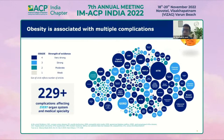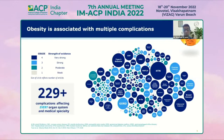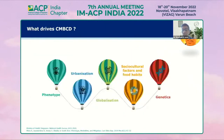You can see here the dark blue is grade 4, the lighter blue is grade 3, then 2 and 1, representing strength of evidence — very strong, strong, moderate, or weak. Currently more than 229 complications are affecting every organ system and medical specialty, starting from de novo type 2 diabetes, hypertension, coronary artery disease, cardiac failure, fatty liver, venous thromboembolism, gout, stroke, depression, endometrial cancers, breast cancers, colorectal cancers, atrial fibrillation, incident heart failure, C-sections, osteoarthritis, GERD, congenital anomalies, and renal cancer.